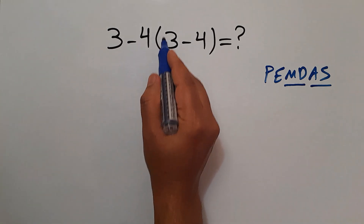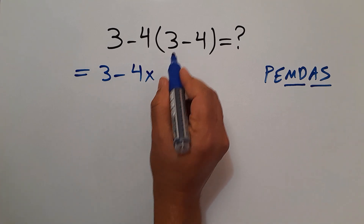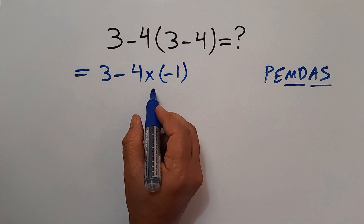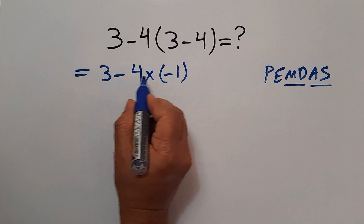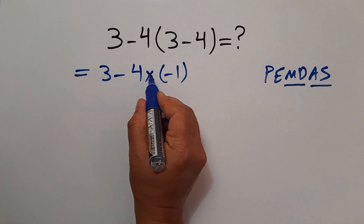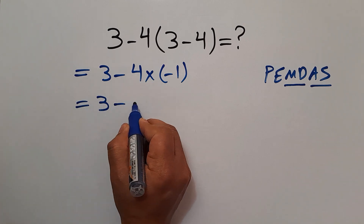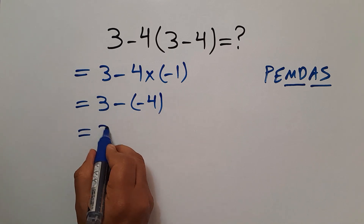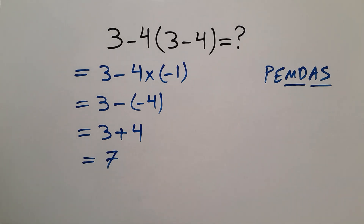Here, first we do these parentheses: 3 minus 4, which equals negative 1. Now according to PEMDAS, multiplication has higher priority than subtraction. So first we do this multiplication: 4 times negative 1, which equals negative 4. So 3 minus negative 4, and this is equal to 3 plus 4. And 3 plus 4 gives us 7. So our final answer to this problem is just 7.